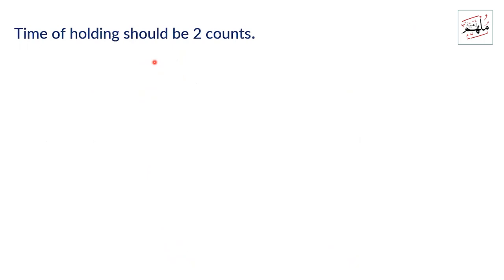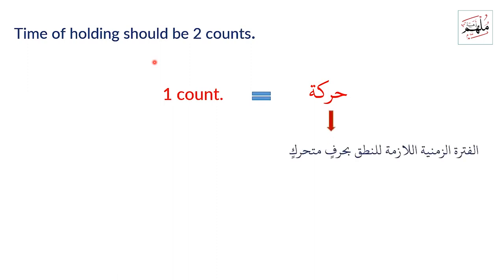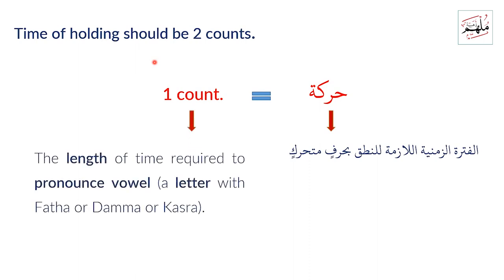What is two counts? What is the meaning of two counts? In Arabic: الحركة — that means one count. حركة means الفترة الزمنية اللازمة للنطق بحرف متحرك, which means in English: the length of time required to pronounce a vowel — a letter with fatha, dhamma, or kasra.